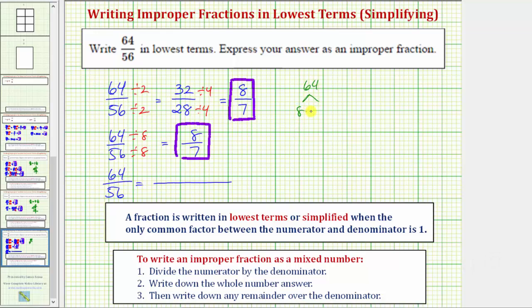64 is equal to 8 times 8, and 8 is equal to 4 times 2, where 2 is prime. And of course, 4 is equal to 2 times 2. So the prime factorization of 64 is 6 factors of 2.